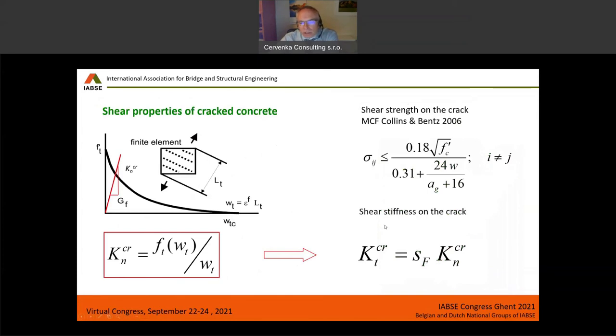So the shear stiffness of the crack is assumed dependent on the stiffness in the normal direction multiplied by this factor SF, which is then calibrated based on experimental results to be 20. And for the shear strength, we are using the formula from the modified compression field theory of Collins and Benz.